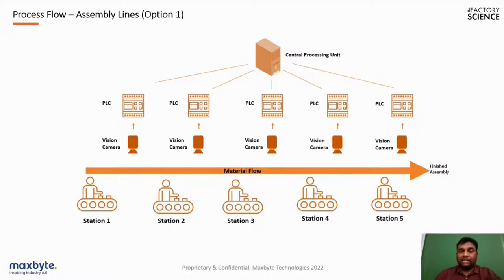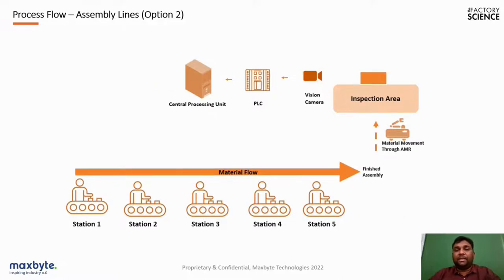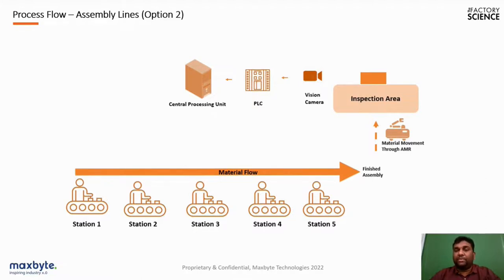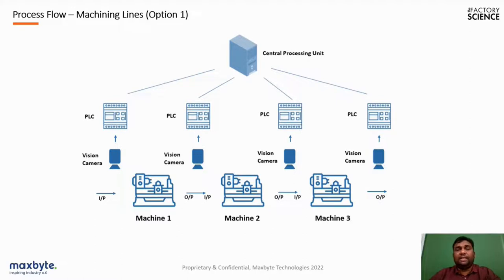That is one type of implementation strategy for vision-based quality inspection on an assembly conveyor. A second option integrates with AMRs — as discussed in the last session, AMRs automate material movement. Once a complete assembly is done, materials are shifted via AMR to the inspection area, where a dedicated vision system verifies the components for quality criteria. This represents a complete end-to-end automated system without any manual intervention — the conveyor runs automatically, assembly happens in machines, AMRs move material, and inspection is done automatically.